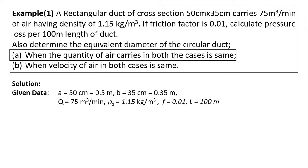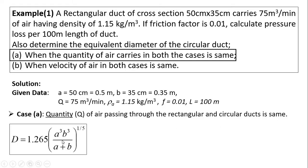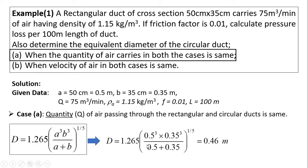Now we calculate the equivalent diameter of circular duct for two criteria. For the first criteria — when quantity of air in both cases is the same — we use the derived formula. Putting in the values of a and b, we get the equivalent diameter of circular duct D = 0.46 m when the quantity of air Q passing through rectangular and circular duct is the same.